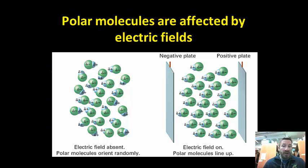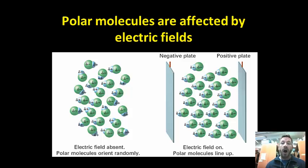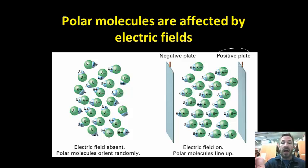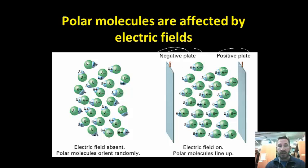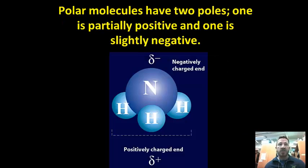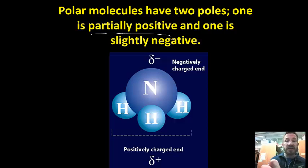If you put polar molecules in an electric field, they would do the same thing a diatomic polar substance would do: all the negative ends would line up against the positive plate and all the positive ends would line up against the negative plate. Polar molecules have two poles — one is partially positive and one is partially negative.